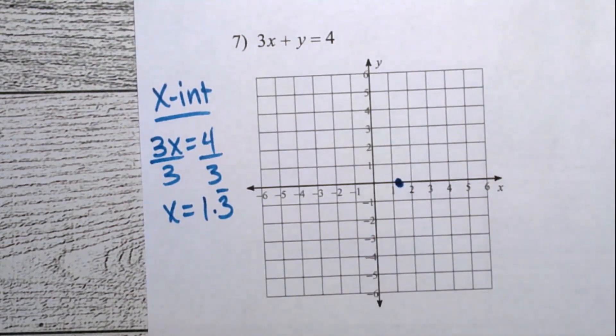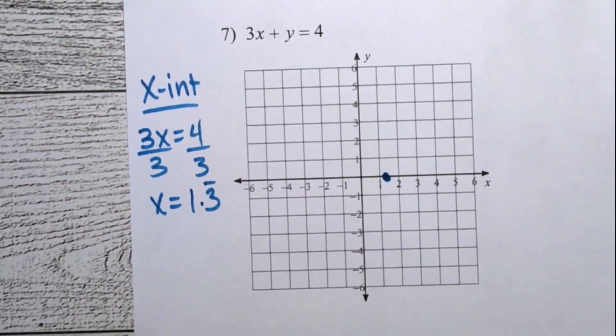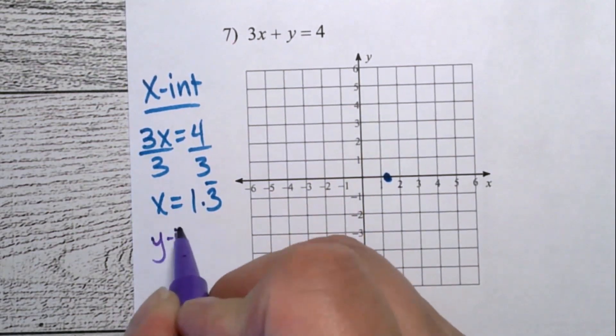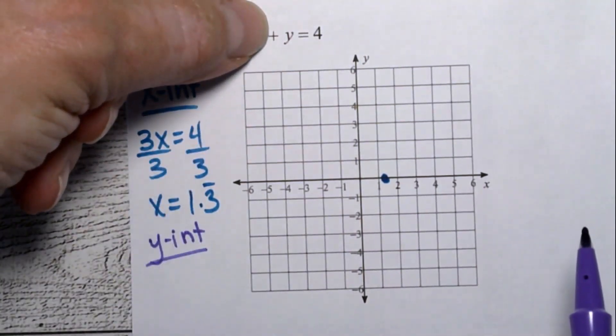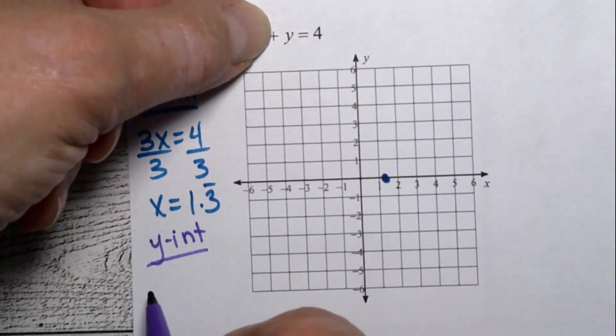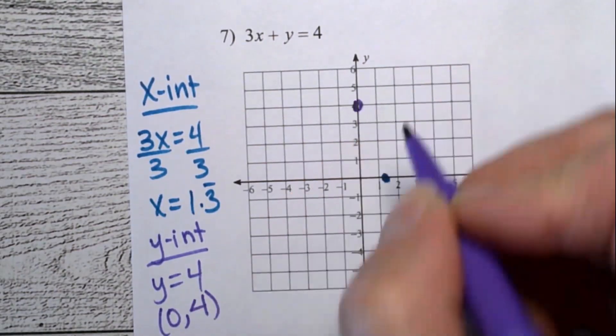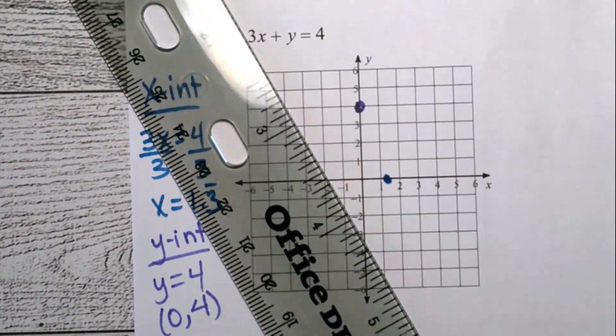Now to find the y-intercept, you do the same thing, except it's going to be a little bit easier in this one. So the y-intercept, we want to keep the y and lose the x. So you cover that up. And then you're looking at y equals four. Write that down. Well, that is the point, zero, four. That goes right there. And then we draw that line. We are done with that.